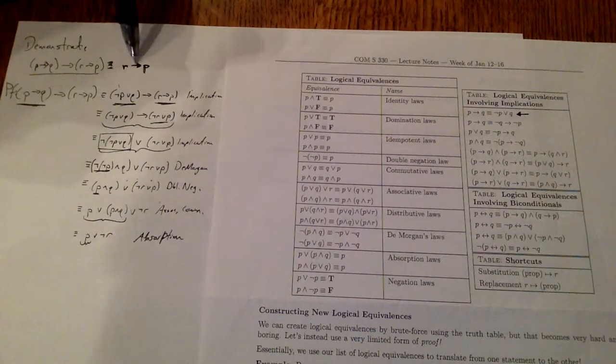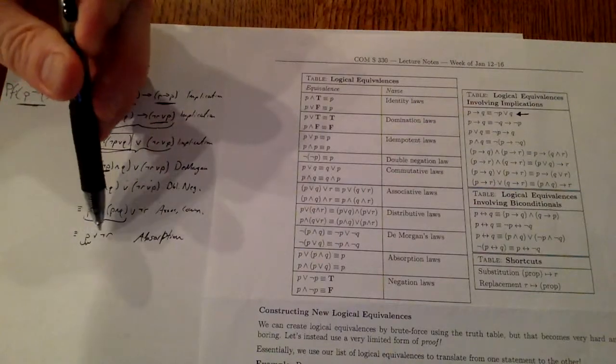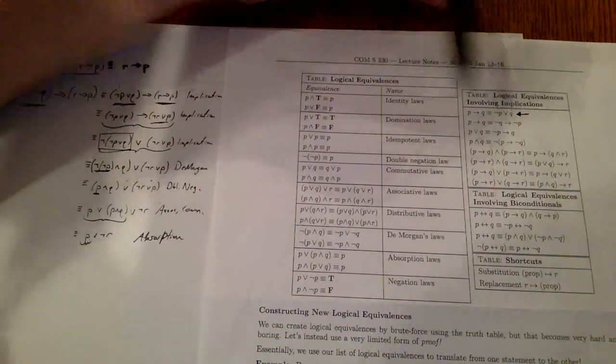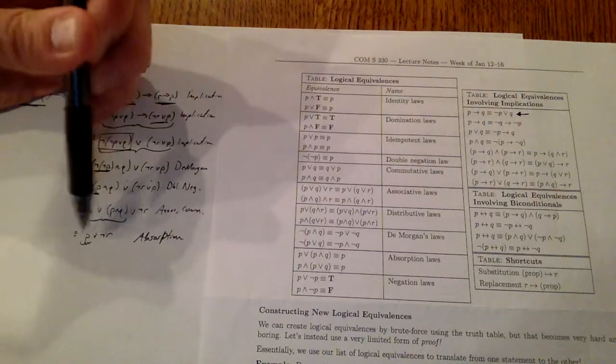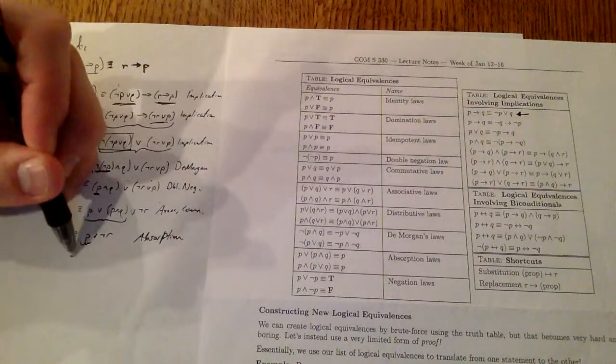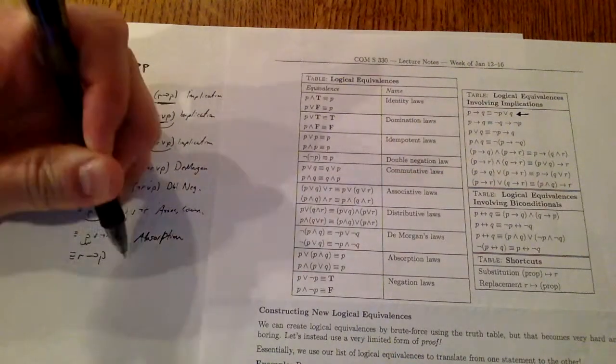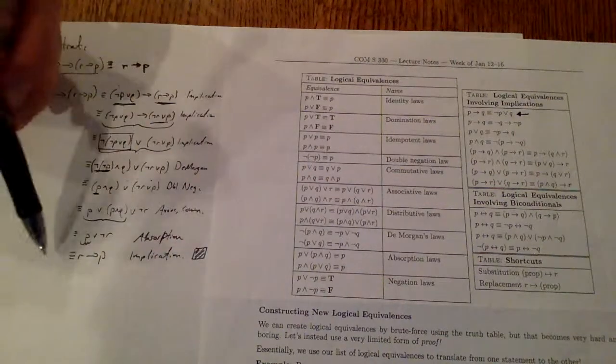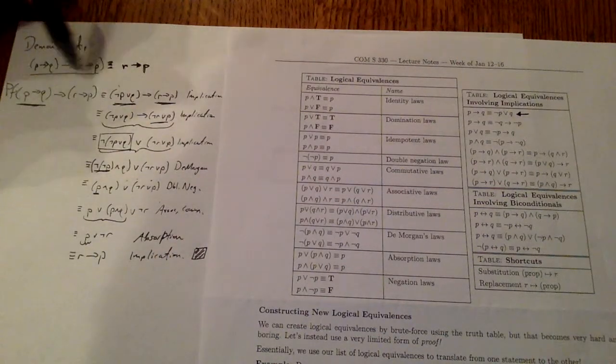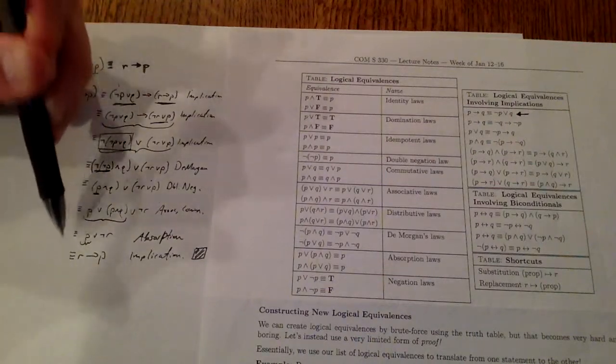And you see that I want to get to R implies P. What I can do is recognize that this is very close to the symbol not R or P. If I think about this as being the not and this is the other one, this is equivalent to R implies P by the implication law. Hooray! We've now demonstrated our equivalence from the left-hand side to the right-hand side using steps of logical equivalences.